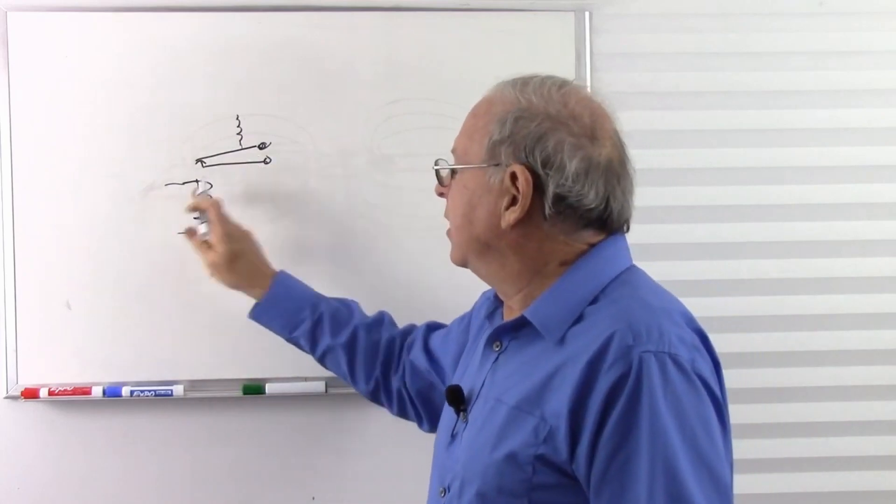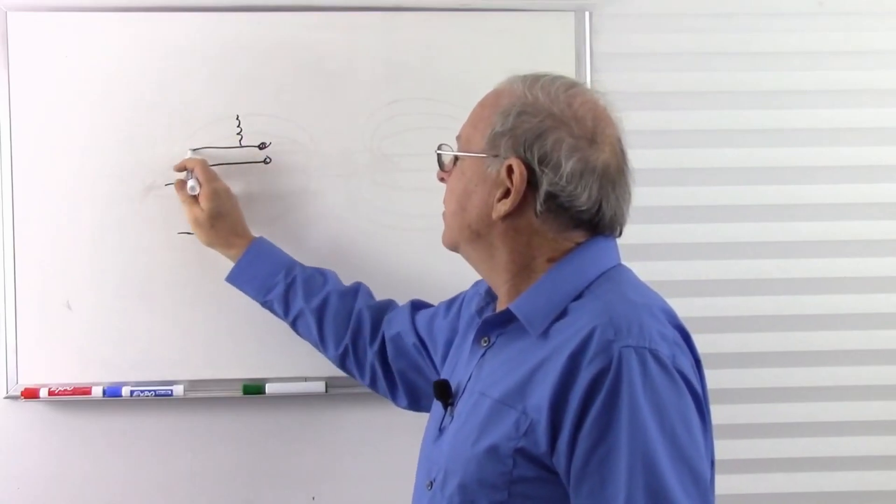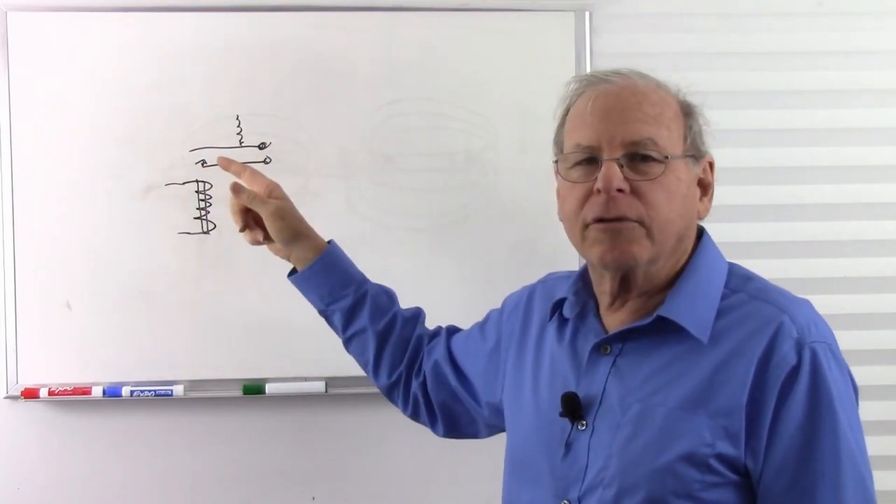And then when we de-energize the coil, the spring is going to pull the armature back up and break contact. So that would be a simple single pole, single throw relay.